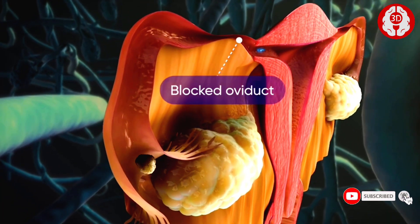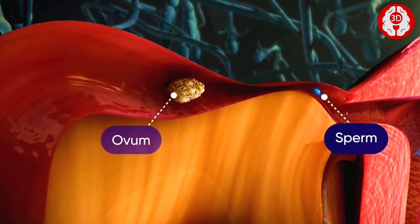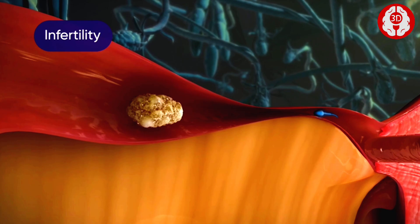In some females, the oviducts are blocked and the sperm is not able to reach the ovum. This leads to infertility.